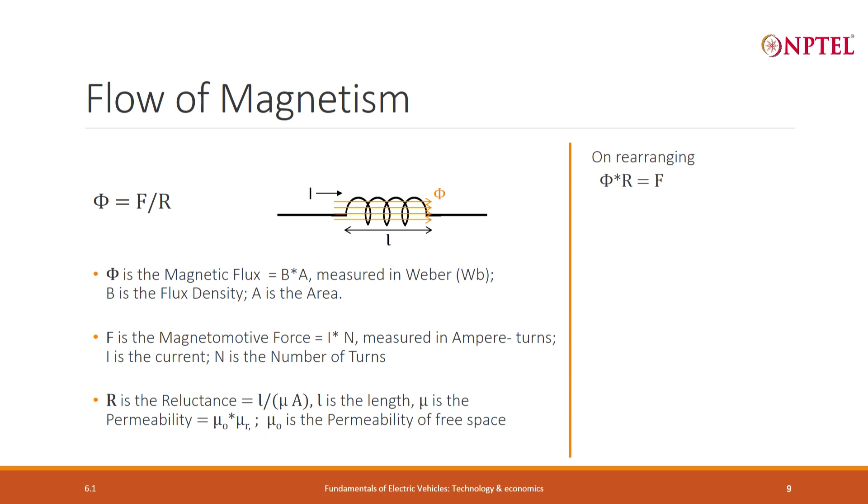Now again I want to remove the messy geometry from the equation. I do not want L and A. So I will take this equation, Ohm's law phi into R is equal to F, R is L by mu A. I will take the A together with the phi and I will take the L to the right hand side.